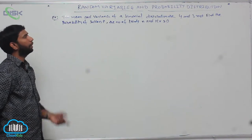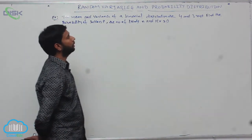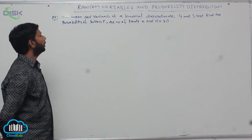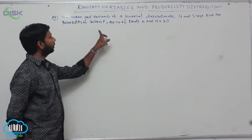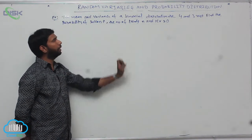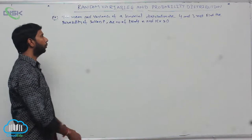The mean and variance of a binomial distribution are 4 and 3. Find the probability of success P, then the number of trials N, and P(X greater than or equal to 1).